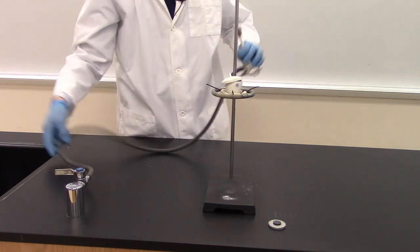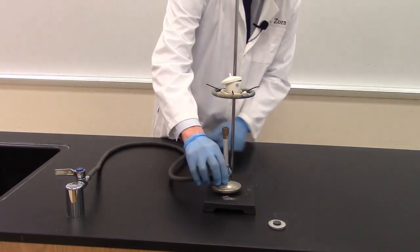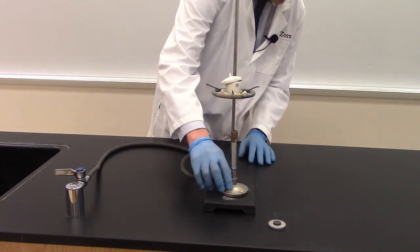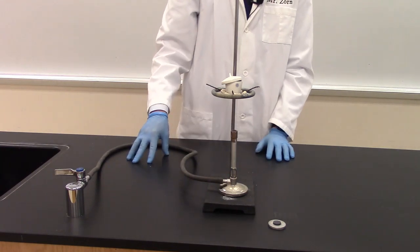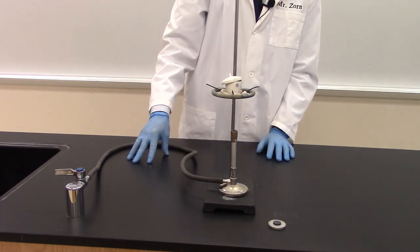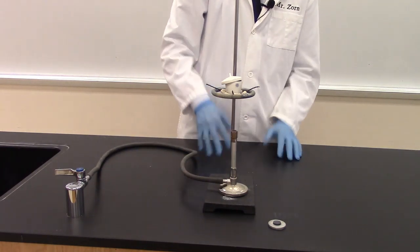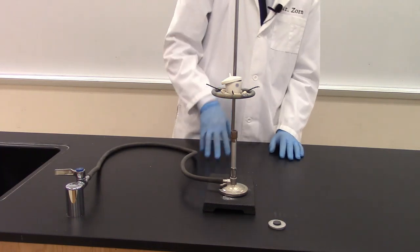Alright, our next step is to take our Bunsen burner and we're going to place this underneath. Okay, you want to have this about two or three inches away from the crucible so that it's not directly in the flame and it's not too far away. So about two or three inches is a sweet spot.